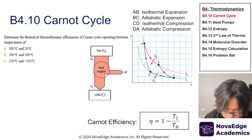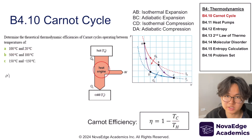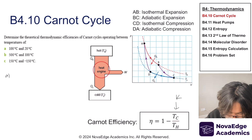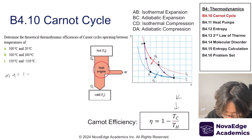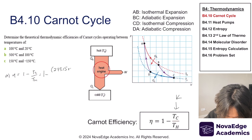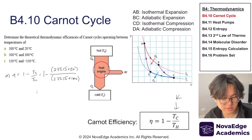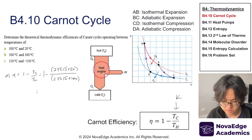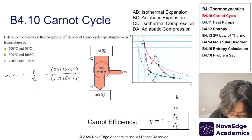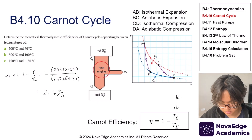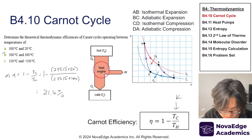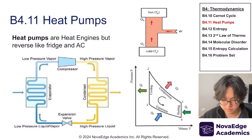Let's do a practice problem. If T-hot is 100°C and T-cold is 20°C, determine the efficiency. Pause and give it a try. The key point: these must be in Kelvin. Efficiency equals one minus Tc over Th, which is one minus (273.15 + 20) over (273.15 + 100). Always convert to Kelvin — this is a very common student mistake. Putting this in the calculator gives 21.4%. Always remember to convert to Kelvin.